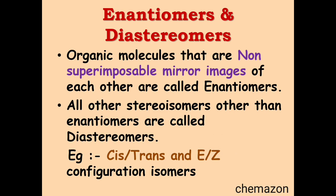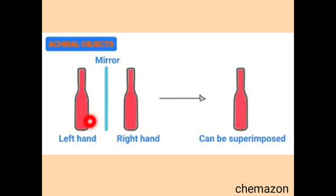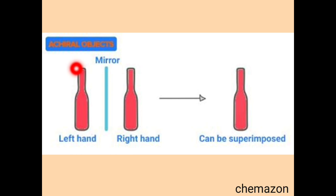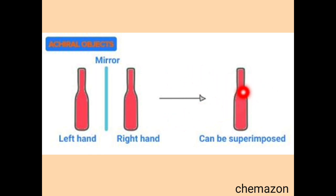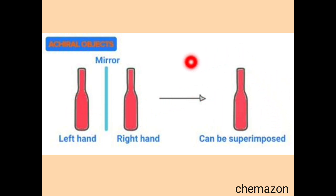Let us now understand what we mean by superimposable and non-superimposable. Here you can see this bottle — if we look at the mirror image of this bottle it would look something like this. Now if I put the bottle on the right over this bottle, it would look like the same one. This is known as superposition or superimposition. Whenever a molecule is superimposable on its mirror image, that particular molecule will be achiral.